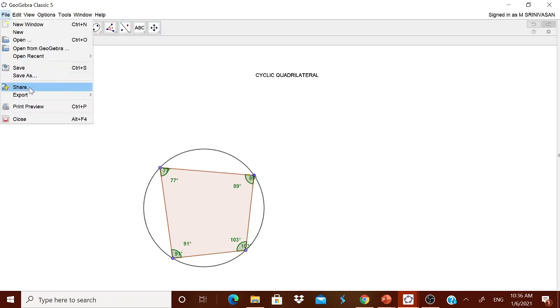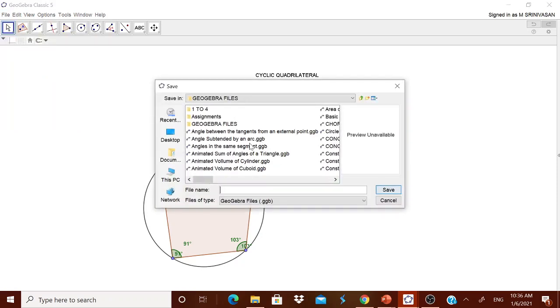Go to this file. Go to this save. Simply save. Click save. Immediately it asks where you want to save. Simply type it as cyclic quadrilateral. Simply save it.